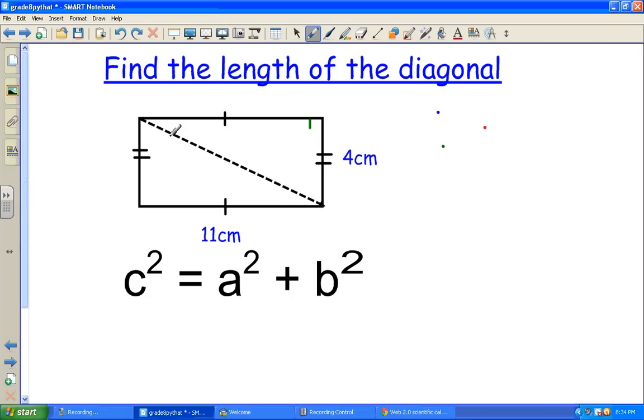Here we have a rectangle, and we have a diagonal drawn across from one corner to the other. And we're supposed to find the length of the diagonal, or this piece right here.